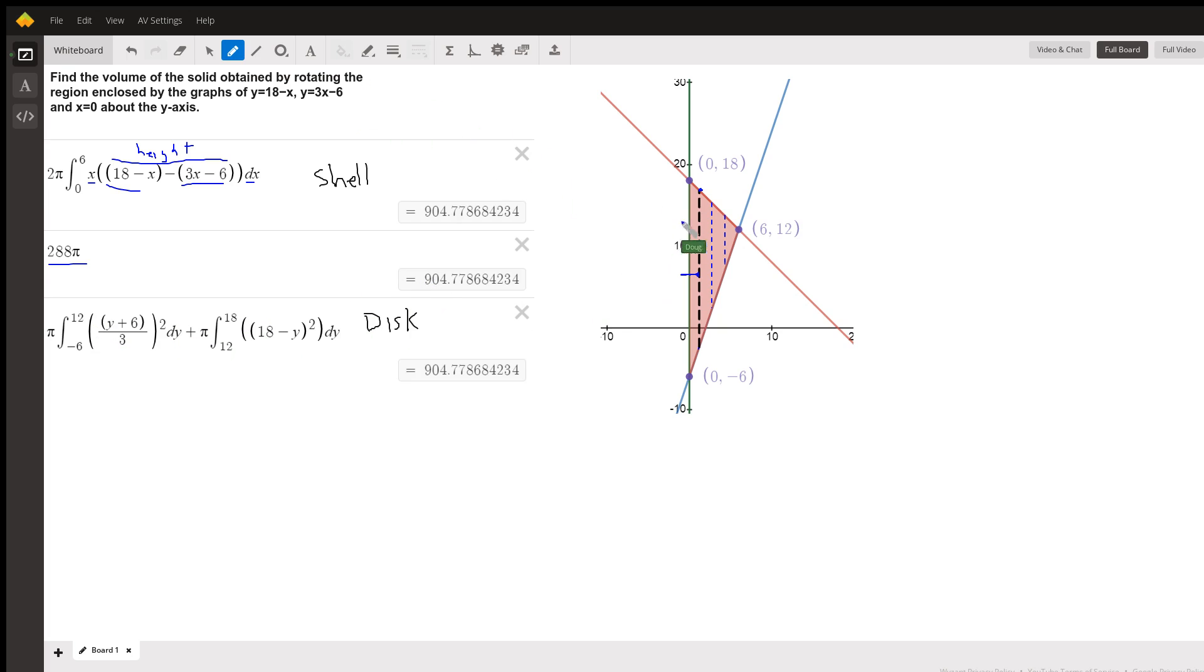We have to, there is one, and that's an x distance. So we have to solve this y equals 18 minus x for x. x equals 18 minus y. There we go.